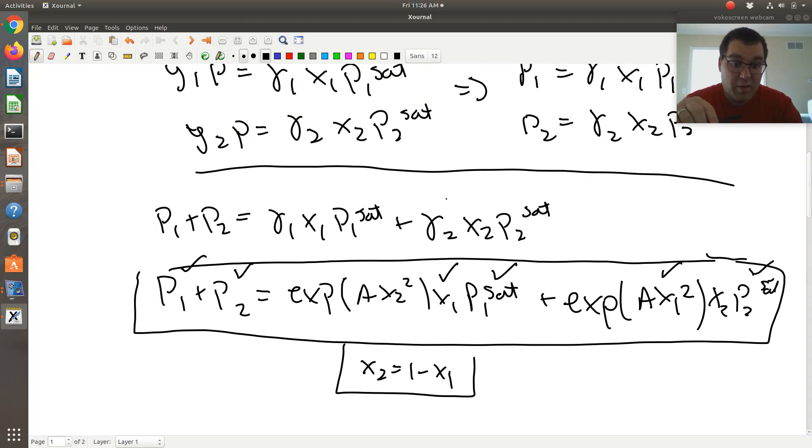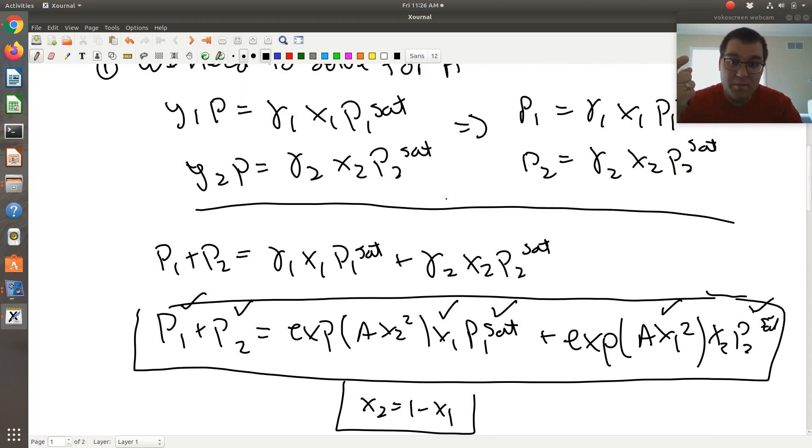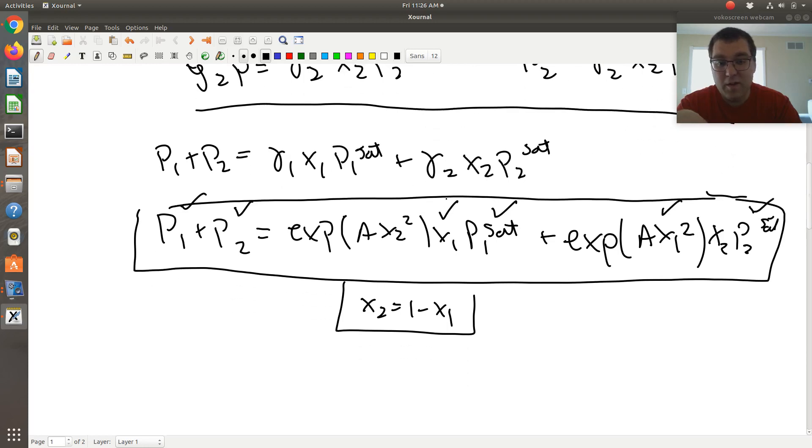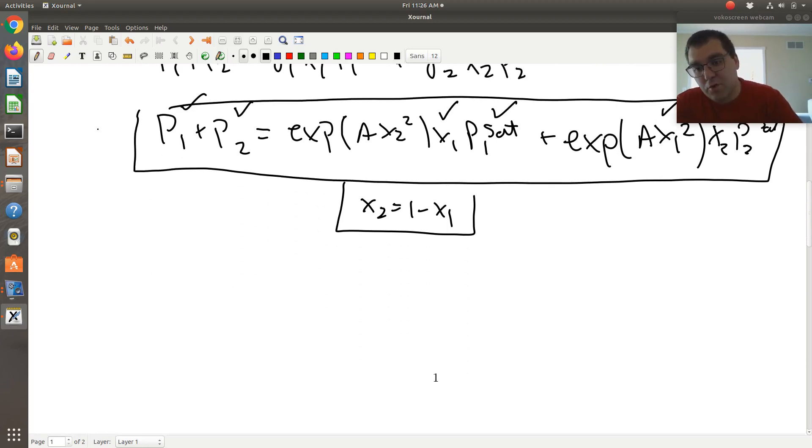The other way you could go about this, so that's option one. We can call that option one, you're just fitting to a data point. Option two would be this whole idea of data reduction.